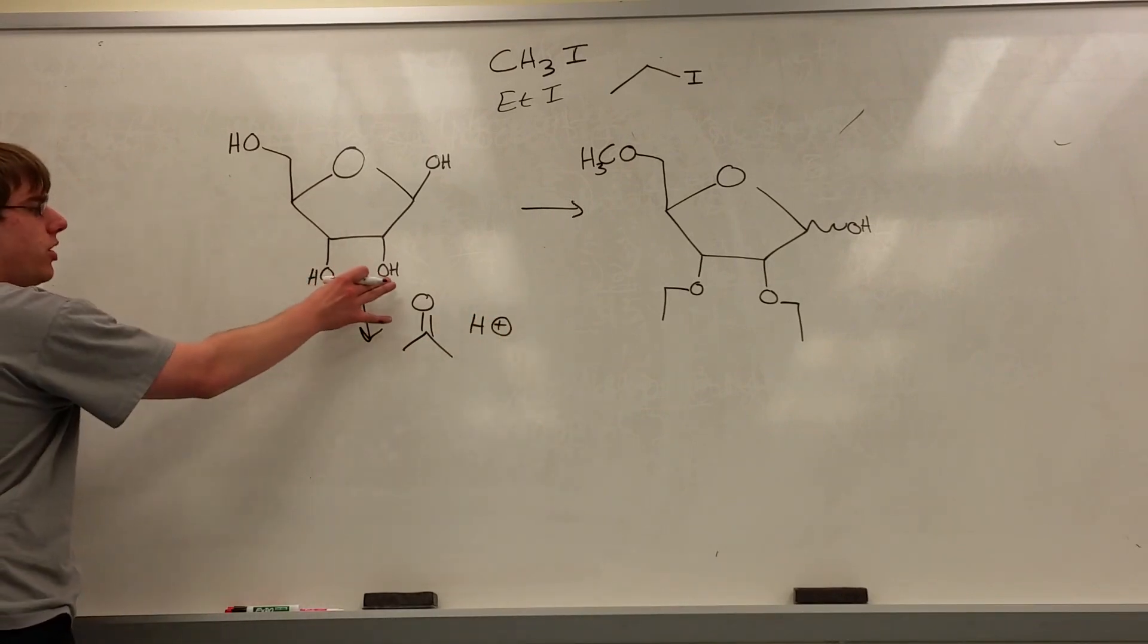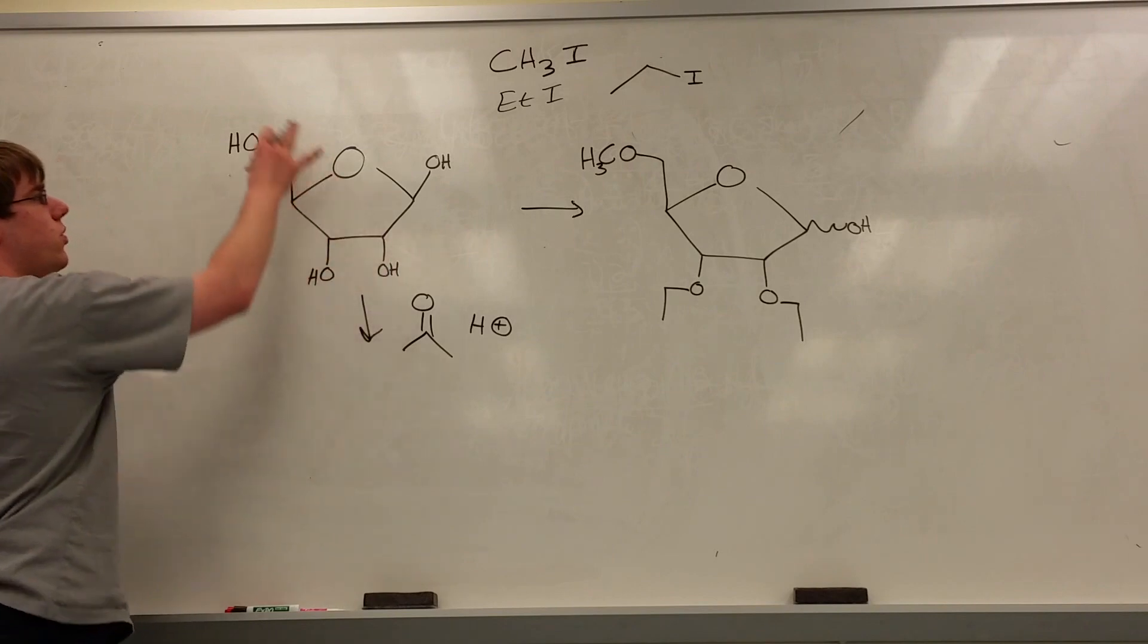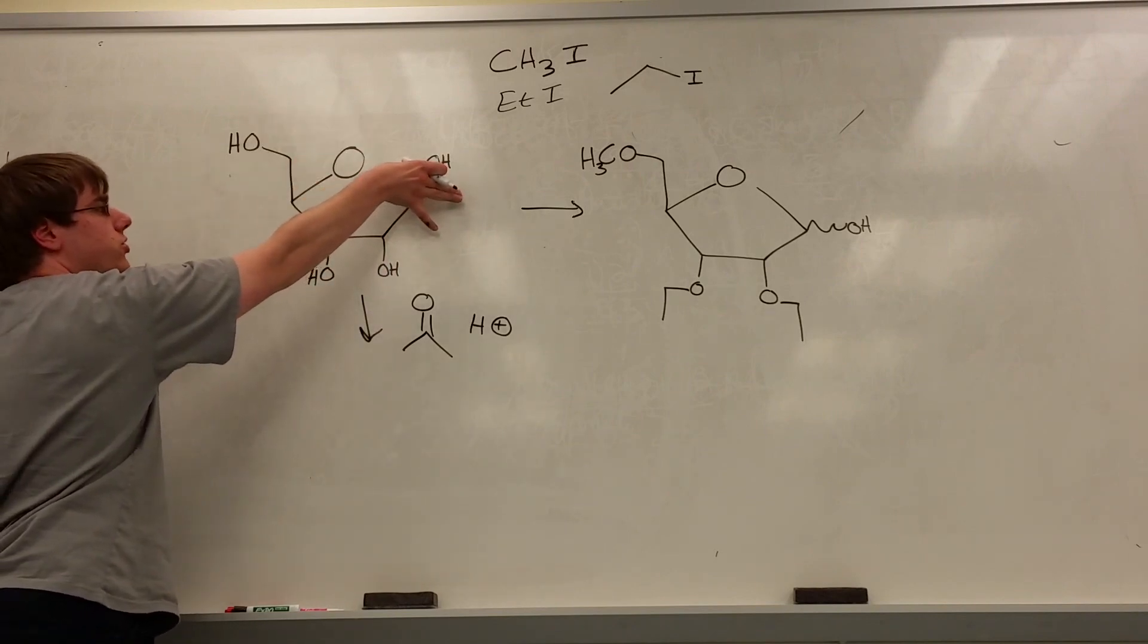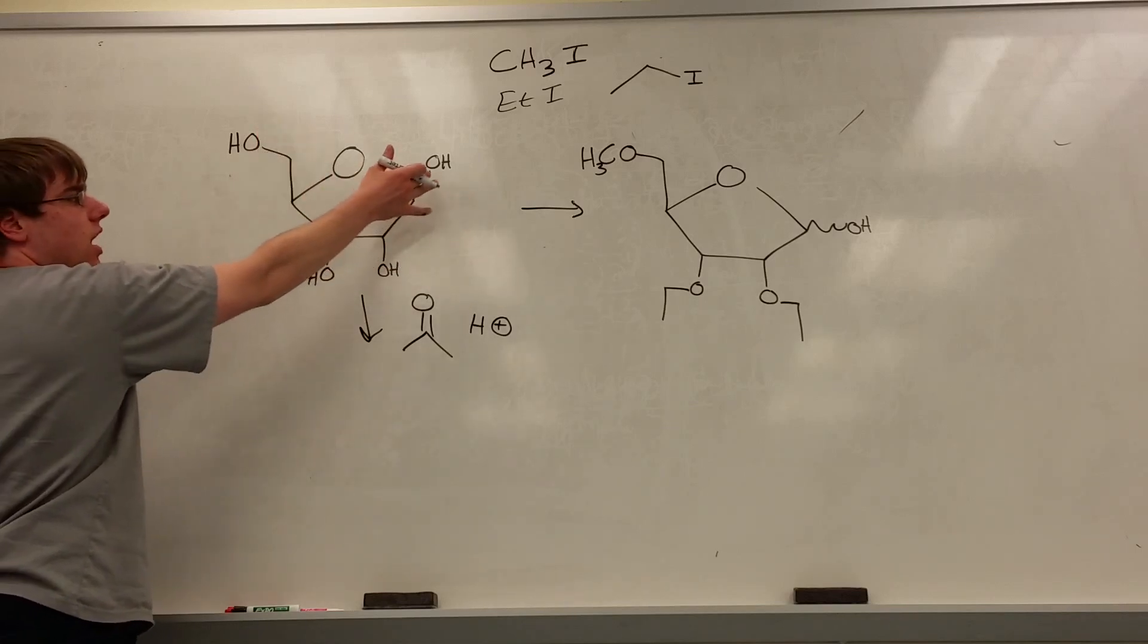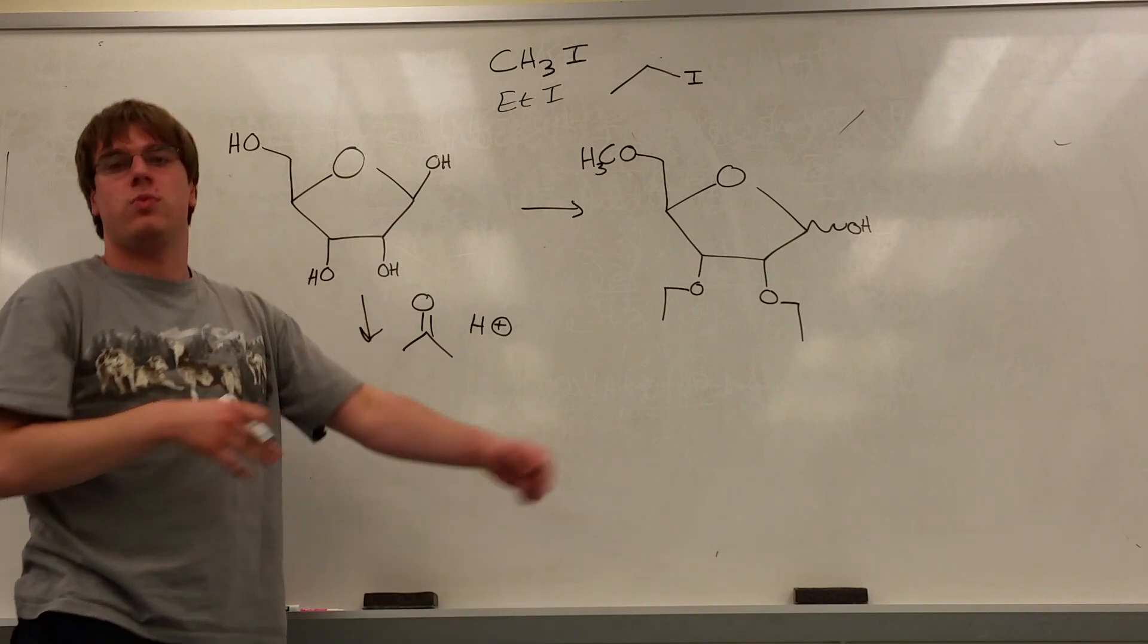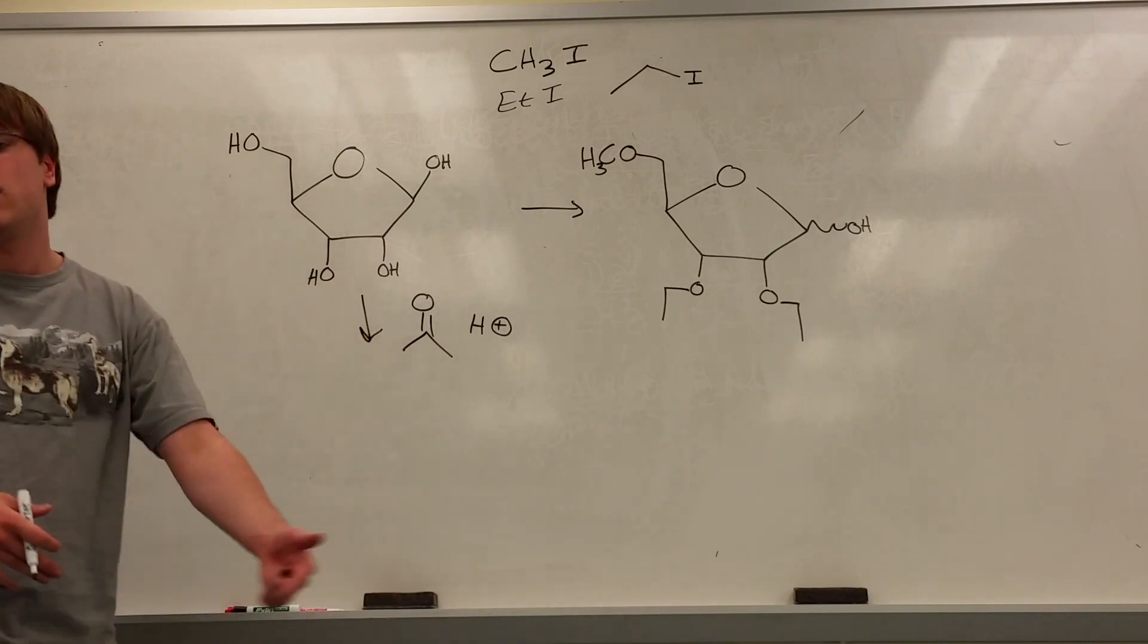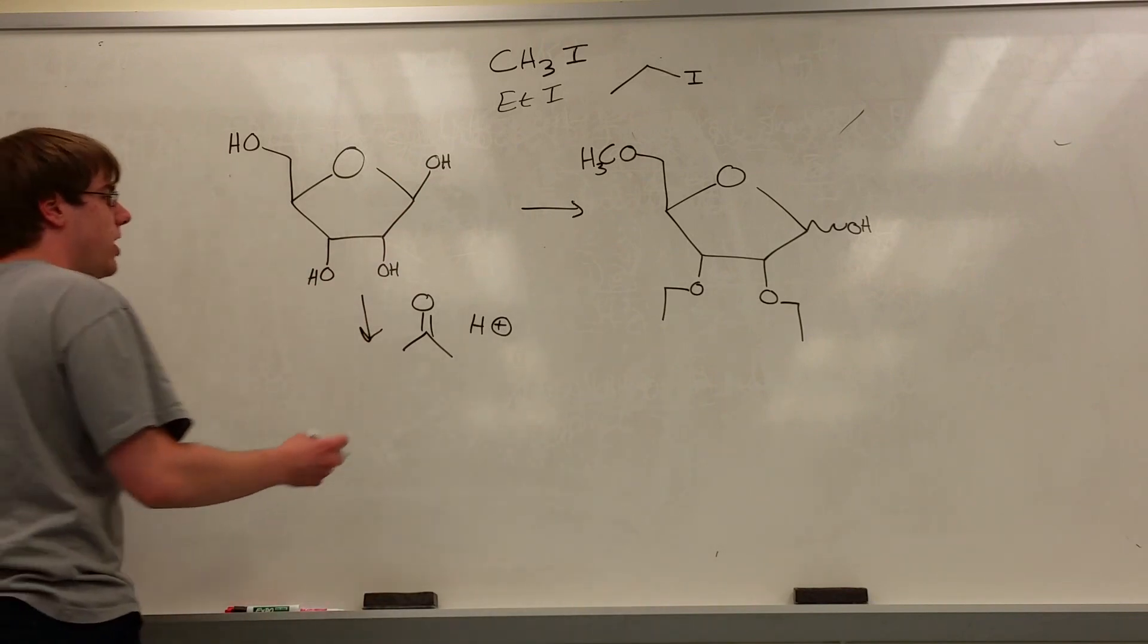So in your first step, you want to do this. That will put a protecting group onto these two OHs, so only this and this are available to react. This one, you can use the CH3I to make it into the OCH3. And this will become an OCH3 as well, but that's easily changeable. We can easily change that back into an OH at the end with H3O positive.